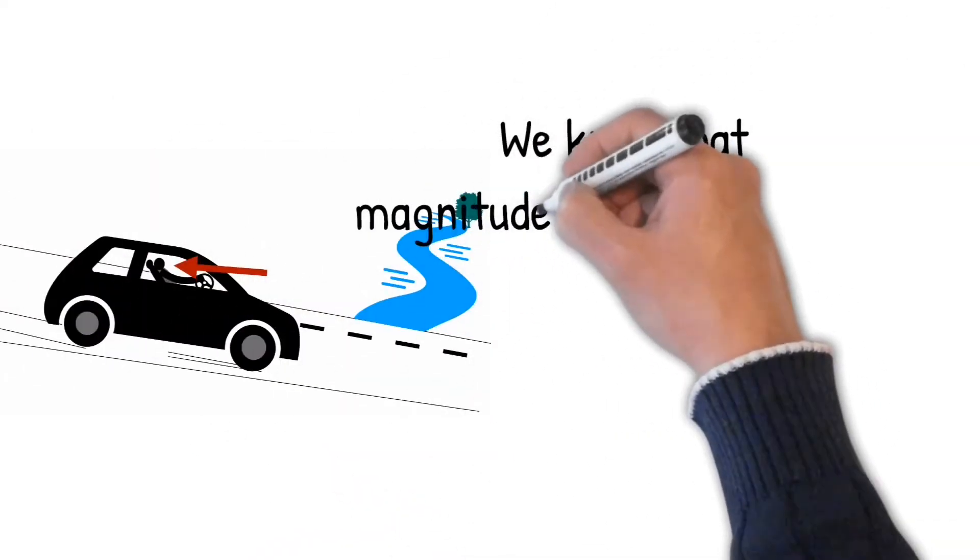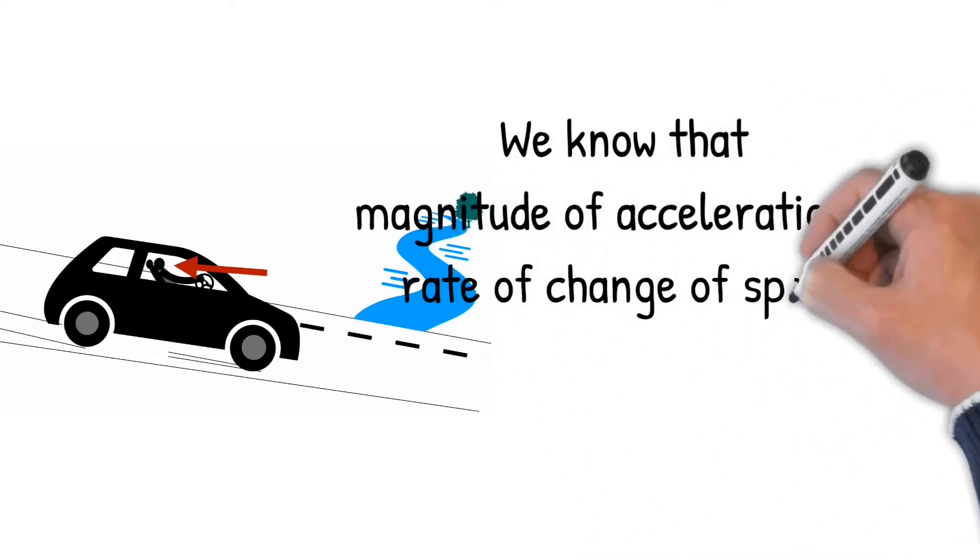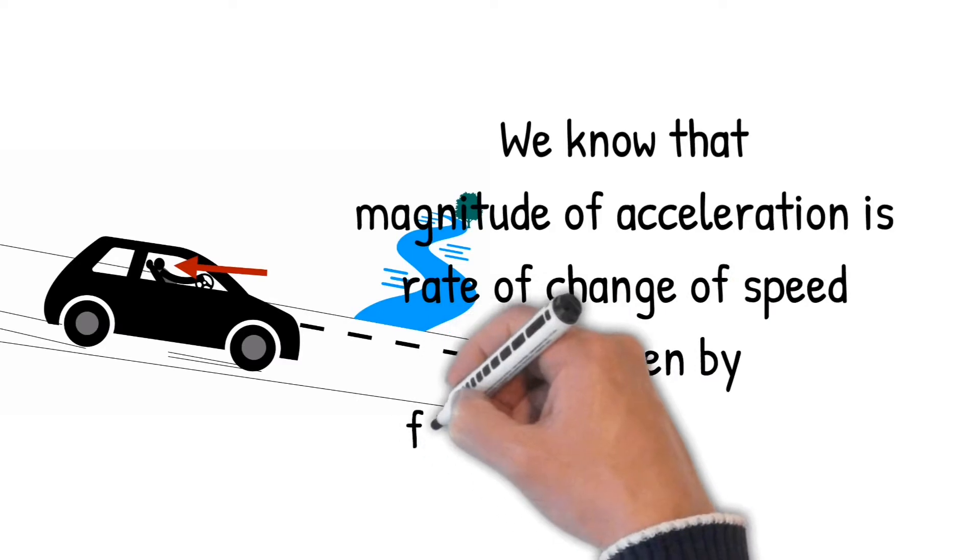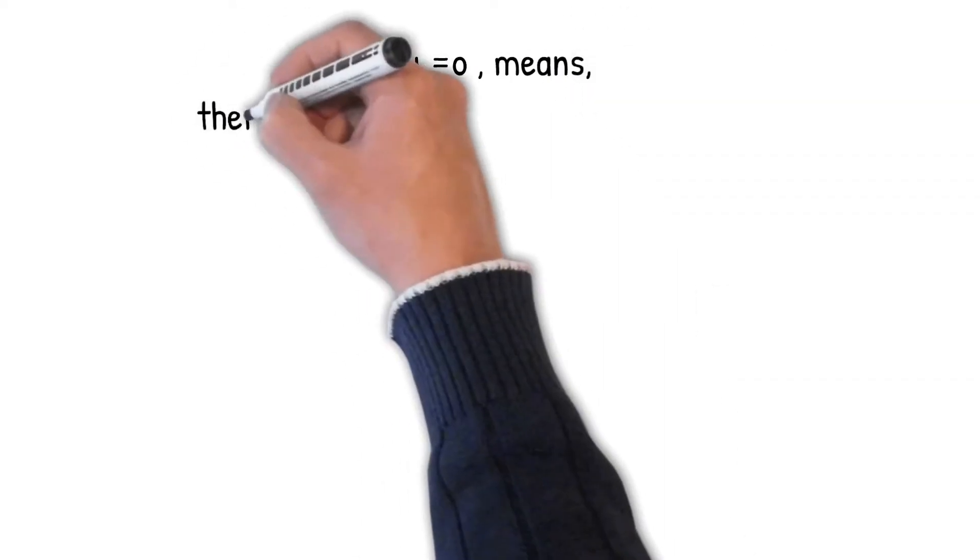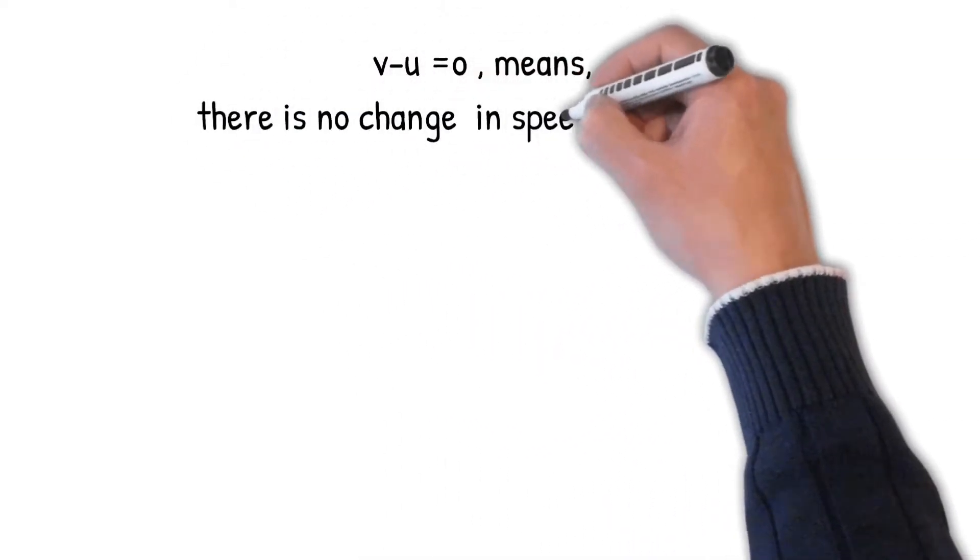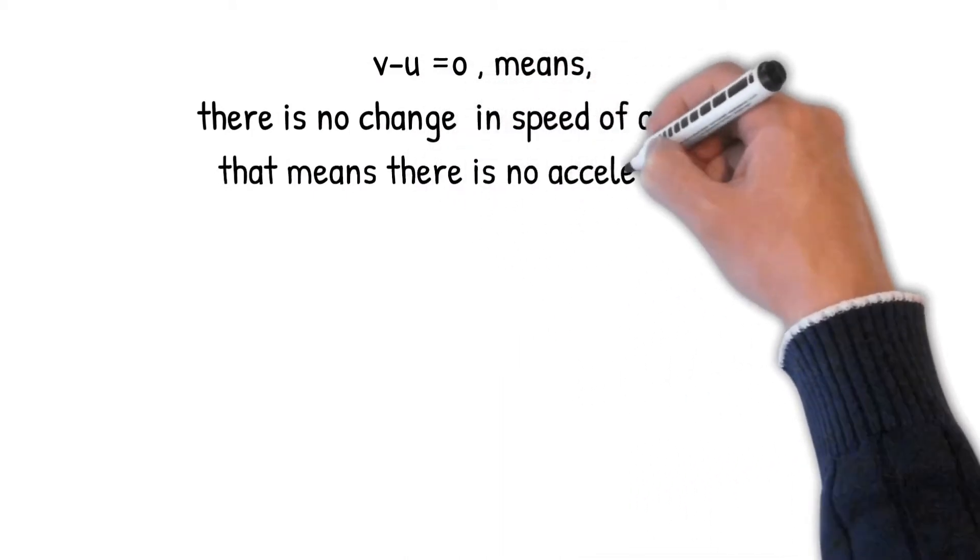We know that magnitude of acceleration is rate of change of speed and given by formula A equal to V minus U by T. V minus U equal to 0 means there is no change in speed of an object. That means there is no acceleration.